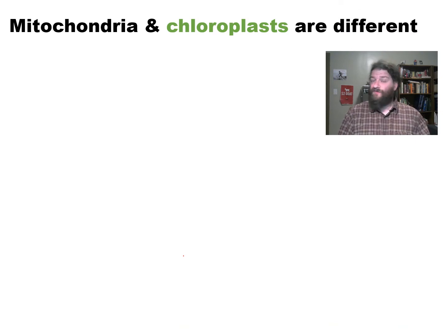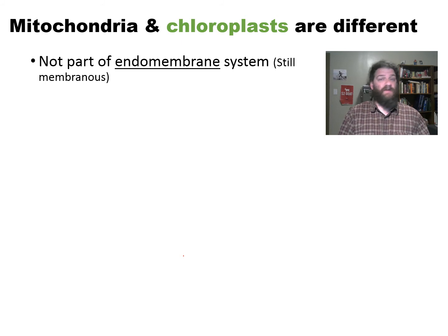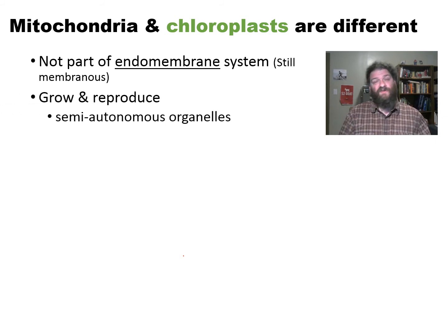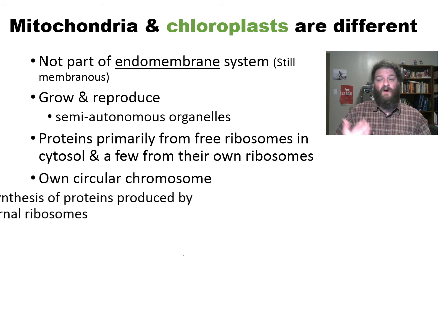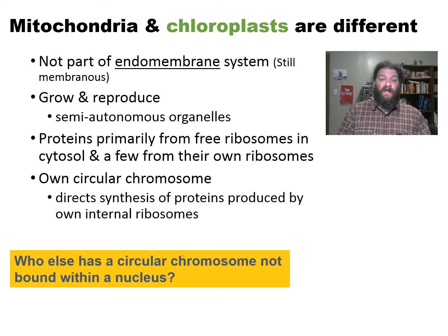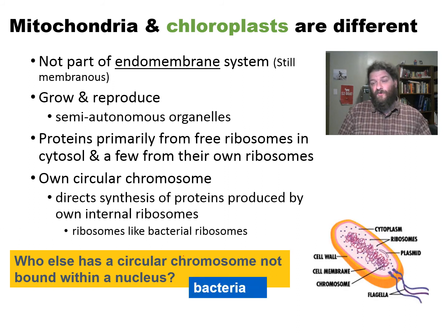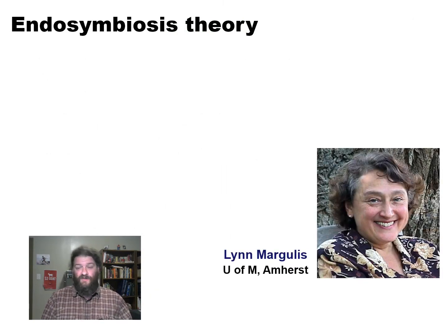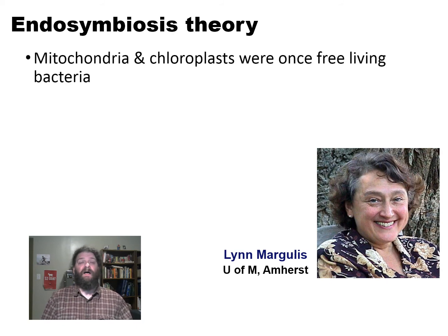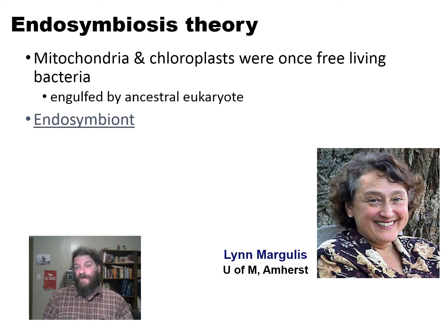Mitochondria and chloroplasts are certainly similar to one another, but they are different from the other organelles. They are not part of the endomembrane system, even though they are themselves made of membranes. They grow and reproduce as semi-autonomous organelles — using their own ribosomes to make their own proteins using their own DNA from their own circular chromosome. Who else has these characteristics? Good old bacteria. Even their ribosomes are just like bacterial ribosomes. This brings us to one of my favorite biologists, Lynn Margulis, and the endosymbiotic theory.